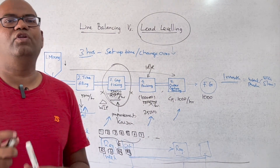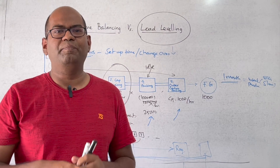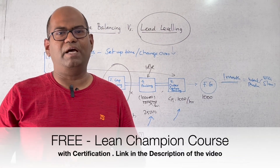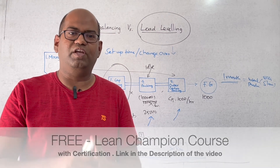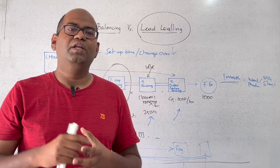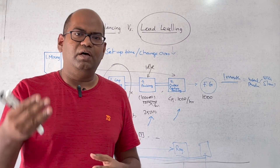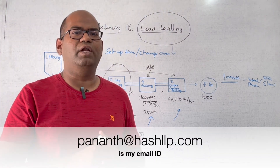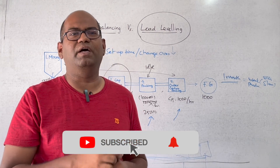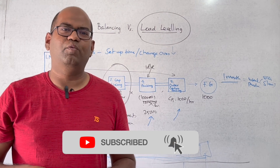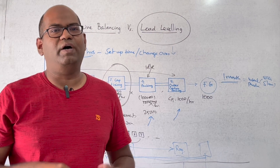So these two are the main concepts in Lean Manufacturing. There is a free Lean Champion Course — the link is in the description, and you will find a certificate at the end of the course. Visit hashllp.com for more. Subscribe to our channel and click the bell icon for notifications. Thank you very much for watching — see you in the next video. Thank you, bye!